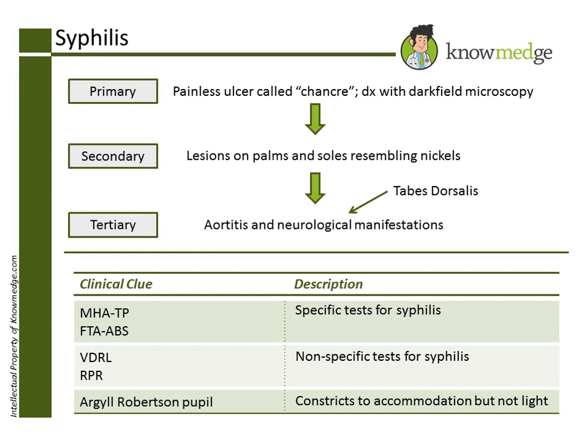The best approach to treating a pregnant patient who is allergic to penicillin is to first desensitize her and then give her penicillin, making choice D incorrect. In non-pregnant, penicillin-allergic patients with syphilis, penicillin desensitization and administration is also the preferred treatment. However, doxycycline can be given instead.